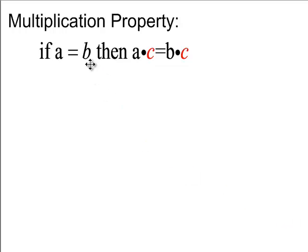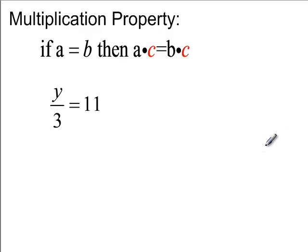Multiplication property. If A equals B, you can multiply both sides by C. So if you have y is divided by 3 is equal to 11, if you multiply both sides by 3, then that will cancel out the 3s because that becomes a multiple of 1. So then you're going to get y is equal to 33.